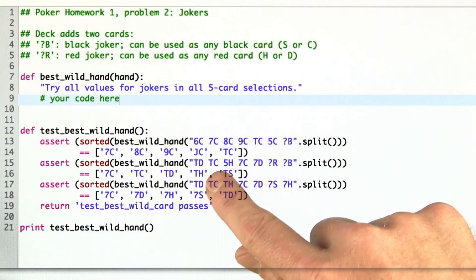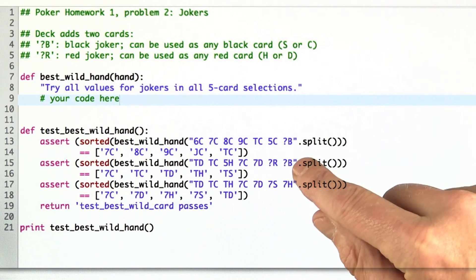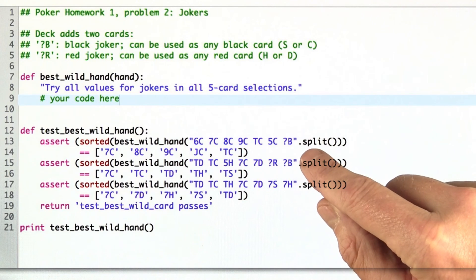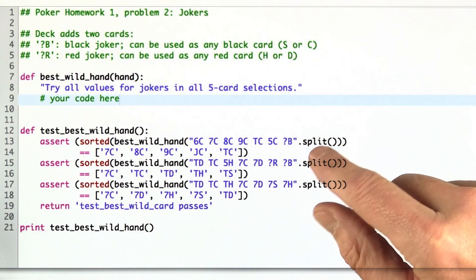Here's an example where we have two 10s, but we have two wild cards, so we can add in 10s for both of them, and we end up with four wild cards, or rather with four 10s, four of a kind.